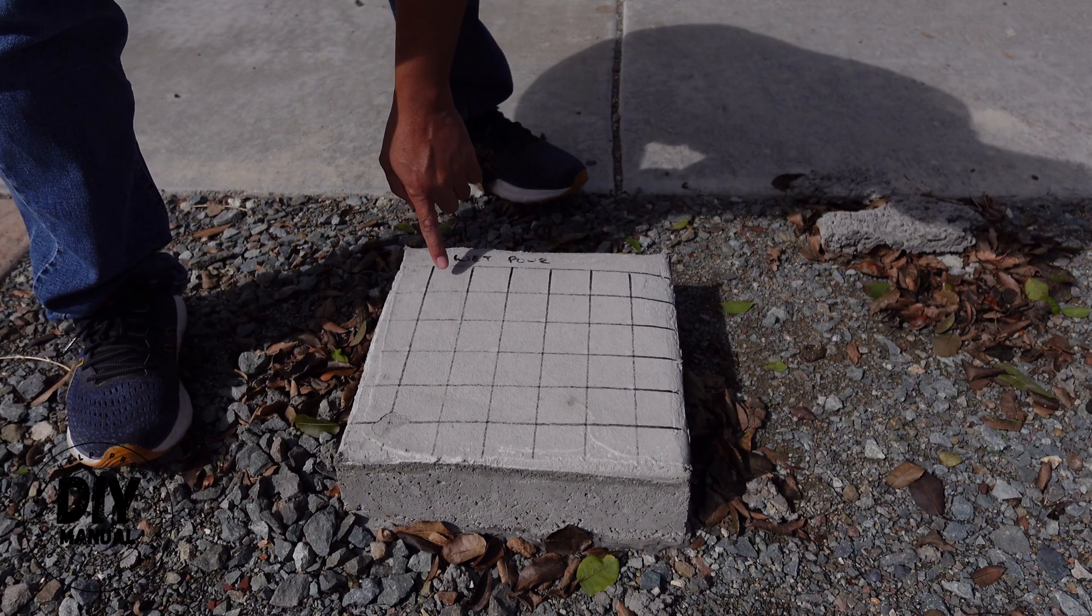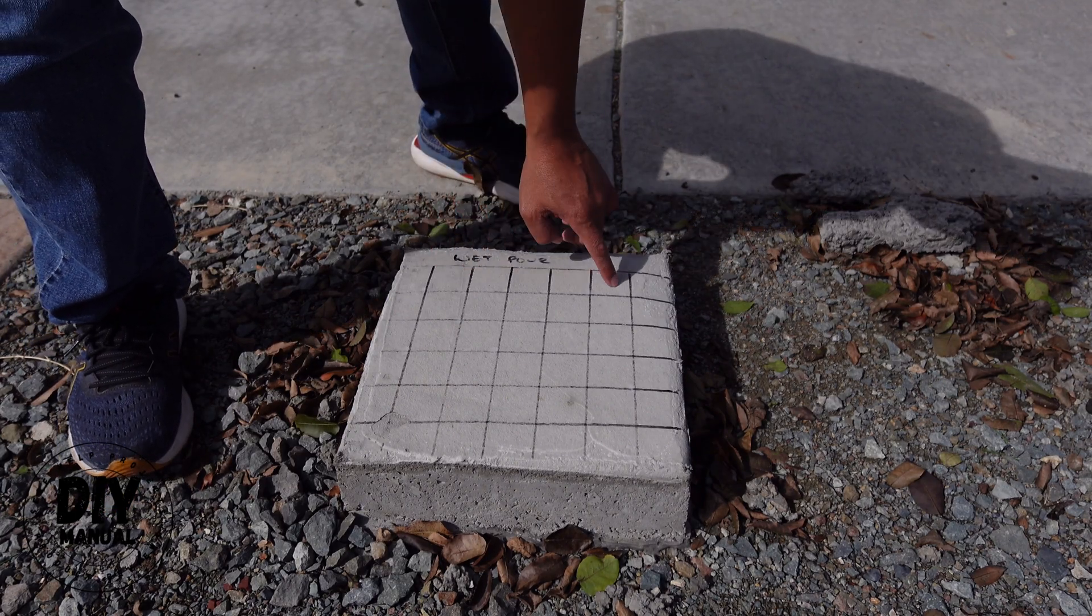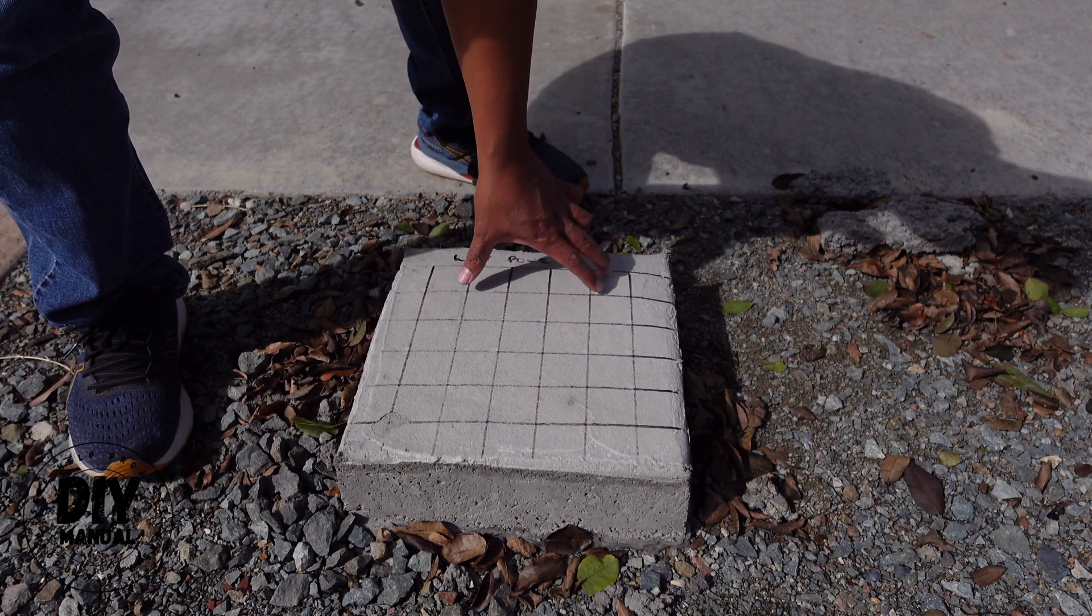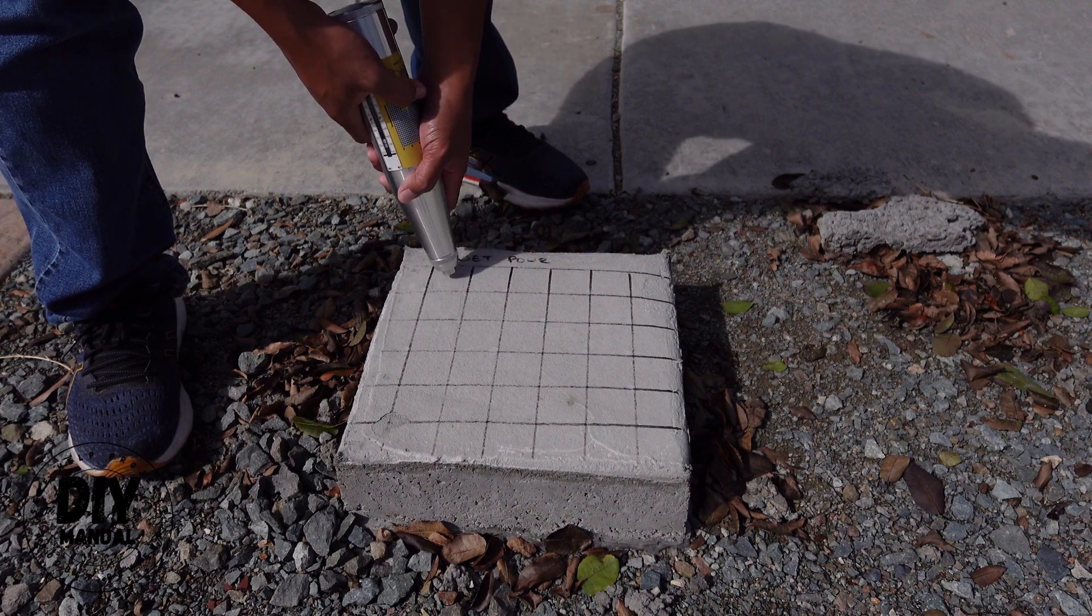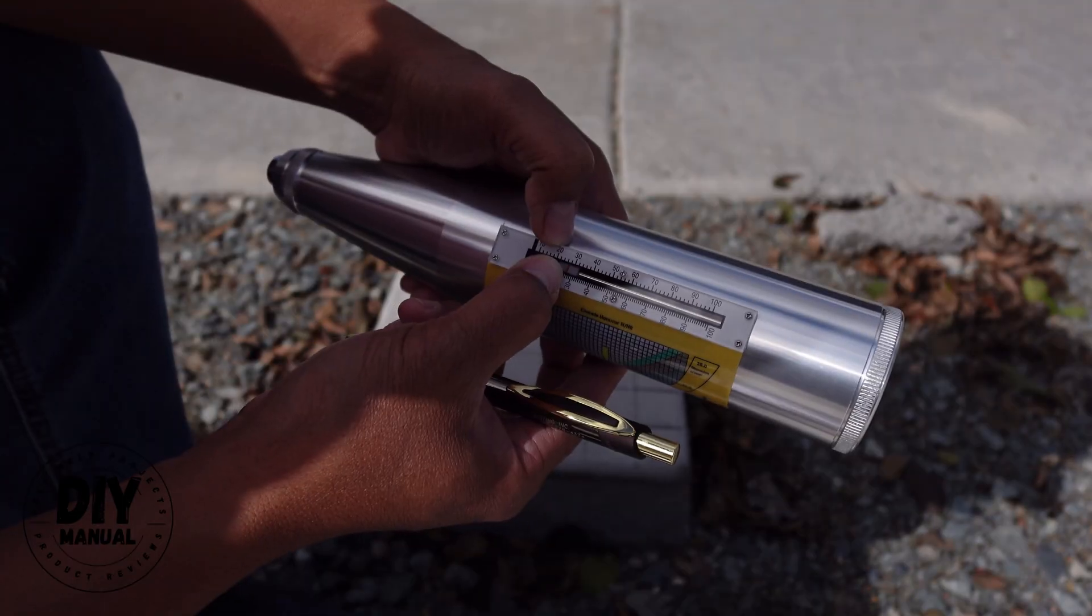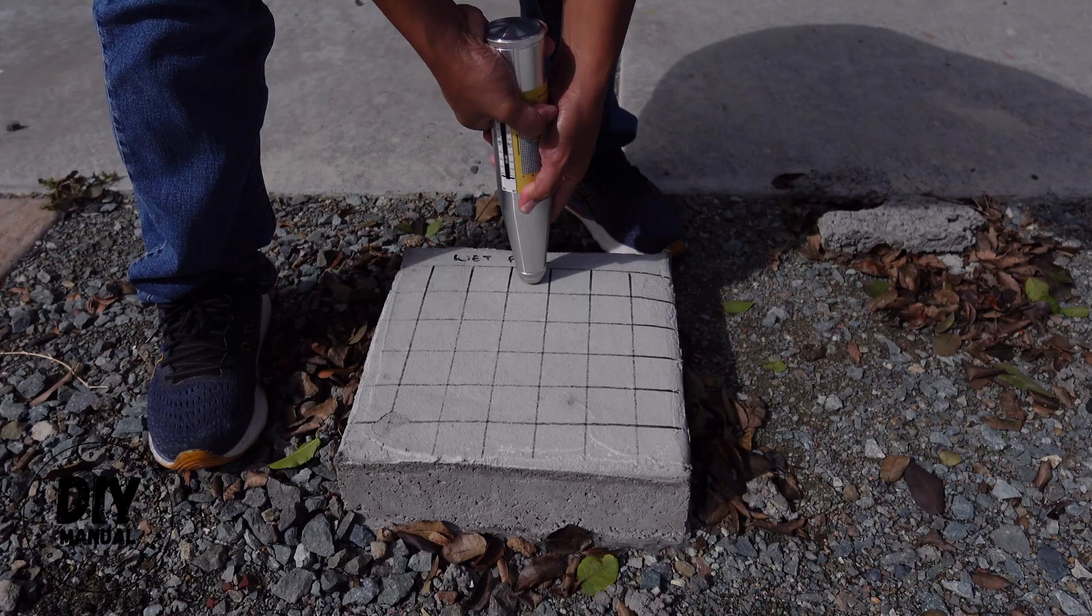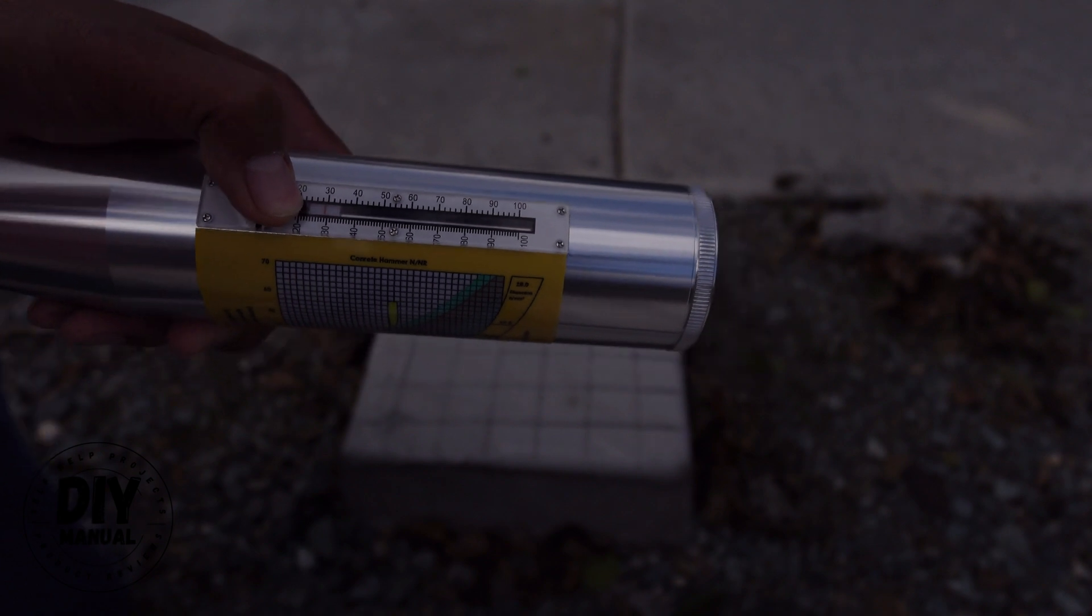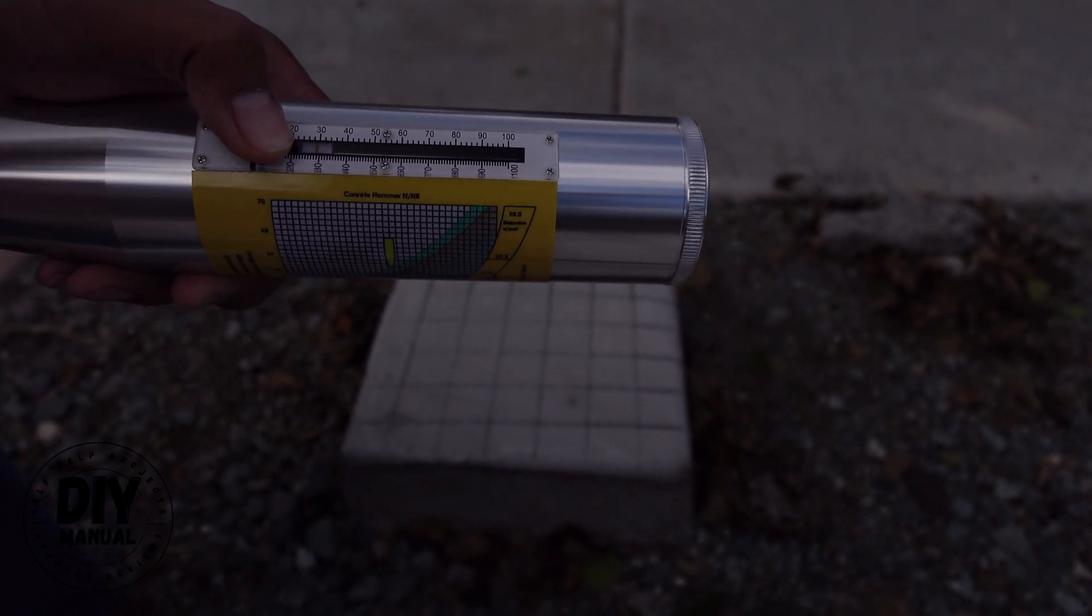We're going to go ahead and start with that wet pour. Test number one. What I'm going to do is I'm going to test 1, 2, 3, 4, 5, 6, 7, 8, 9, 10. So these 10 blocks right here, we're going to test. I got a 26. We got a 29.